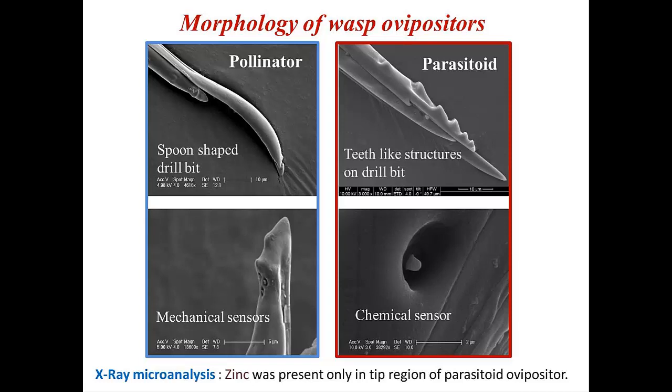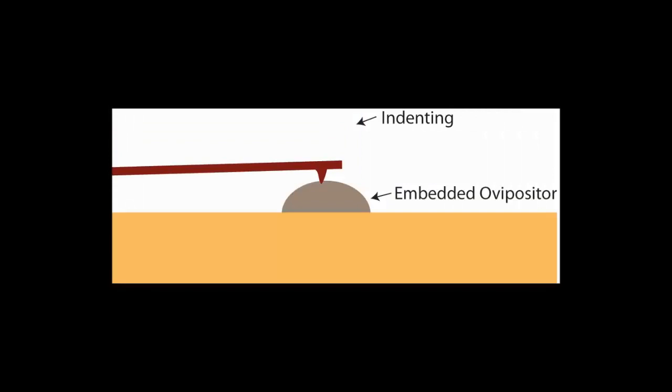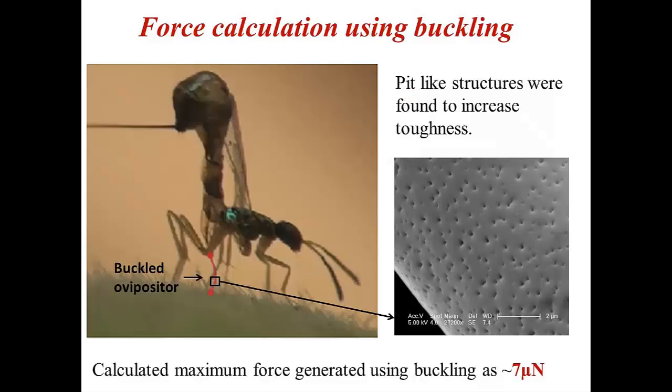Interestingly, AFM results showed increased stiffness and hardness values in the regions containing zinc. Using the measured dimensions, properties, and buckling analysis, we estimated the maximum force generated by the insect. Pit-like structures were found in these regions, which increased toughness. Use of multidisciplinary tools in mechanics and biology can hence provide useful insights into the fascinating process of boring.